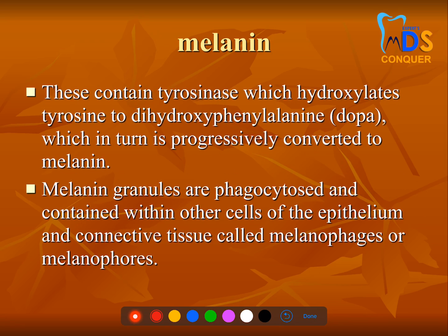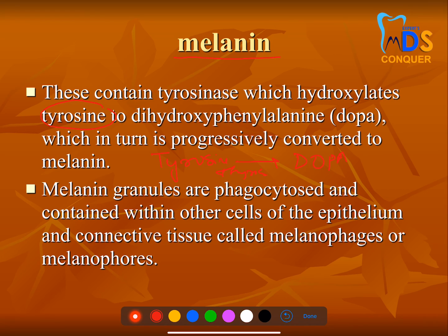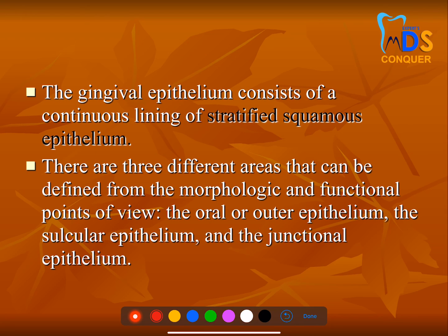Melanin production is important. Tyrosine is converted to DOPA — dihydroxyphenylalanine — through the enzyme tyrosinase. Tyrosinase converts tyrosine to DOPA, and this is further converted to melanin, resulting in melanin pigmentation. There are different epithelial layers based on arrangement: junctional epithelium, sulcular epithelium, and oral epithelium.